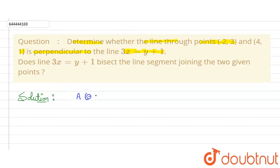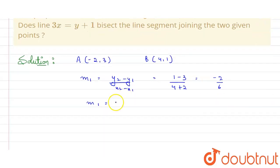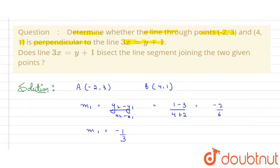A line is passing through point A with coordinates (-2, 3) and point B with coordinates (4, 1). To find the slope, suppose m1 is the slope, given by (y2 - y1)/(x2 - x1). So that's (1 - 3)/(4 - (-2)) = -2/6, which gives slope m1 = -1/3.